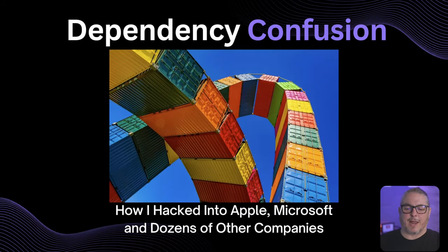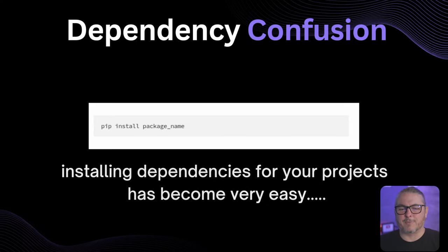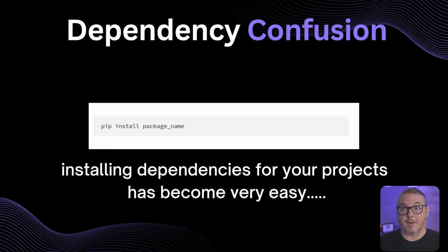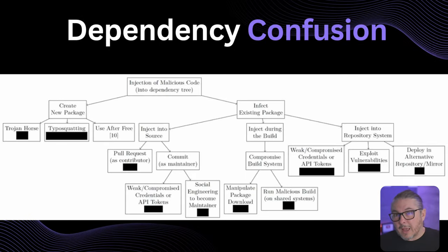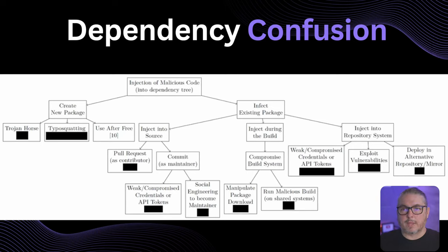Now let's move on to dependency confusion — how a researcher hacked into Apple, Microsoft, and dozens of other companies. This attack was so simple, so clever, and so effective, and I don't feel it's completely fixed. Installing dependencies for your projects with pip has become very easy — this applies to Python specifically but also to other libraries you may be building with. Developer packages and external resources are under increased attack in 2023.